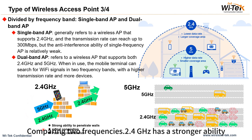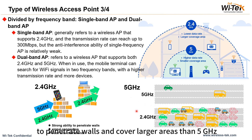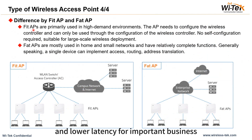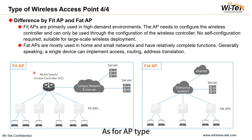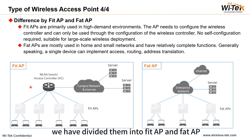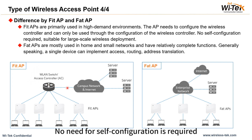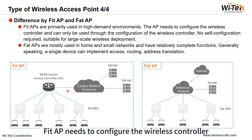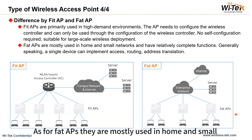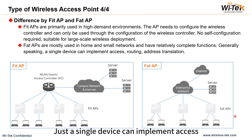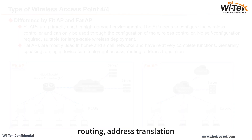Comparing the two frequencies: 2.4 GHz has a stronger ability to penetrate walls and cover larger areas than 5 GHz, but 5 GHz provides a higher wireless data rate and lower latency for important business. As for AP type, we have FIT AP and FAT AP. FIT APs are primarily used in high-demand environments with no need for self-configuration and require a wireless controller. FAT APs are mostly used in home and small networks and have relatively complete functions — a single device can implement access, routing, and address translation.